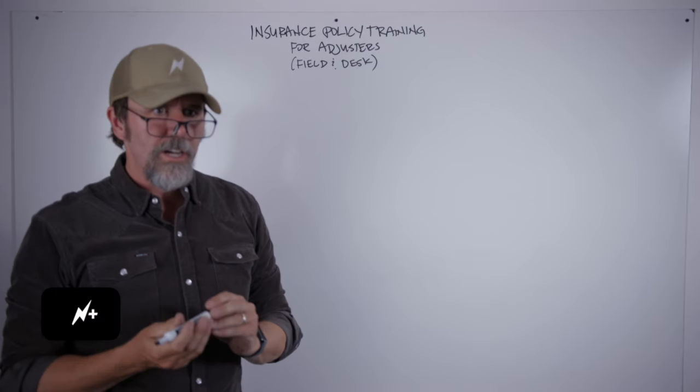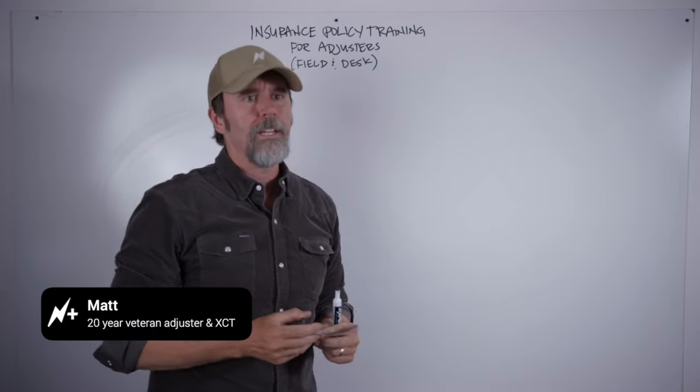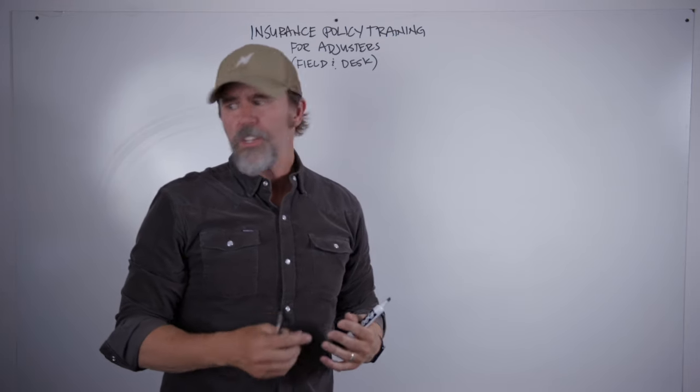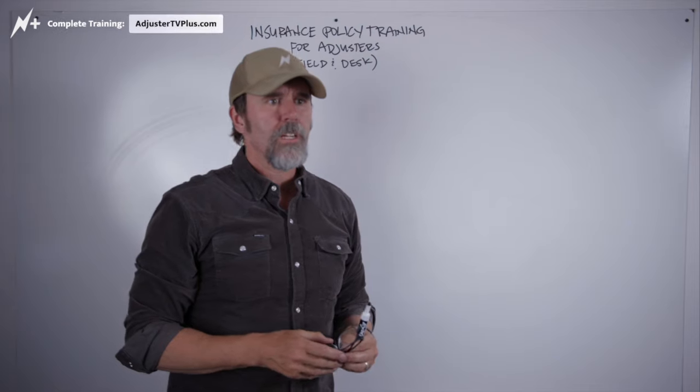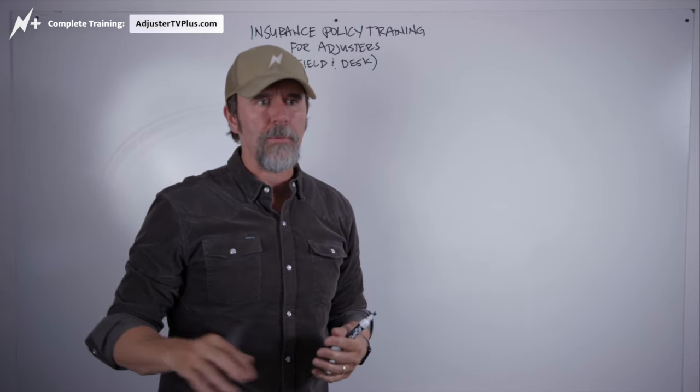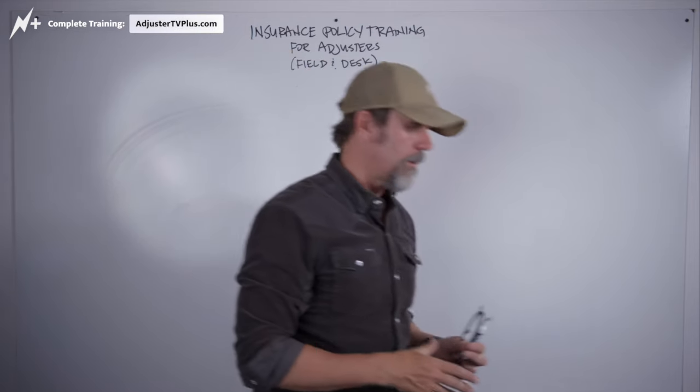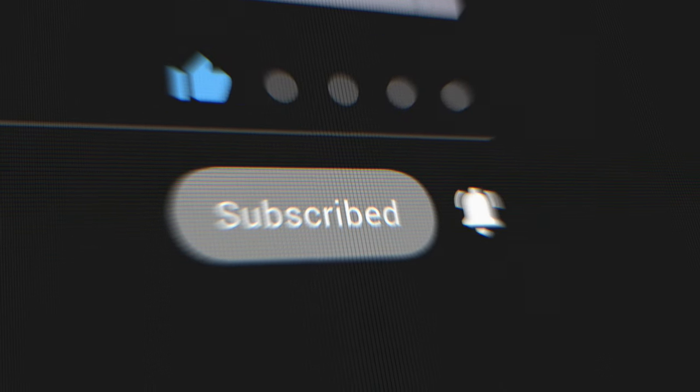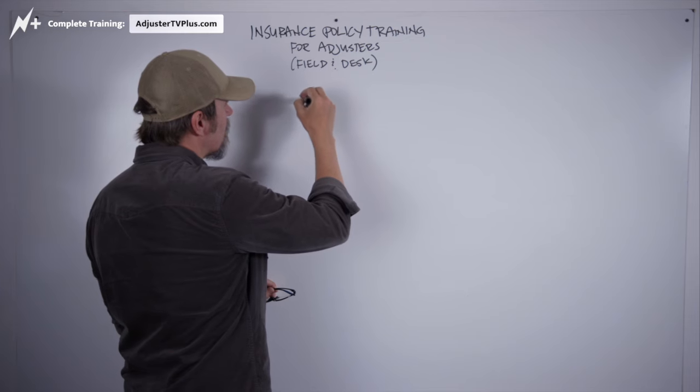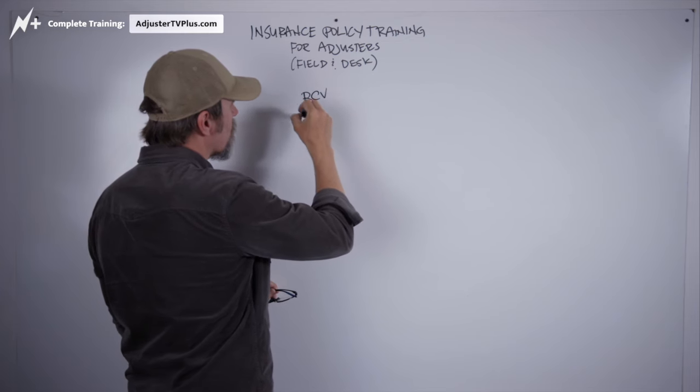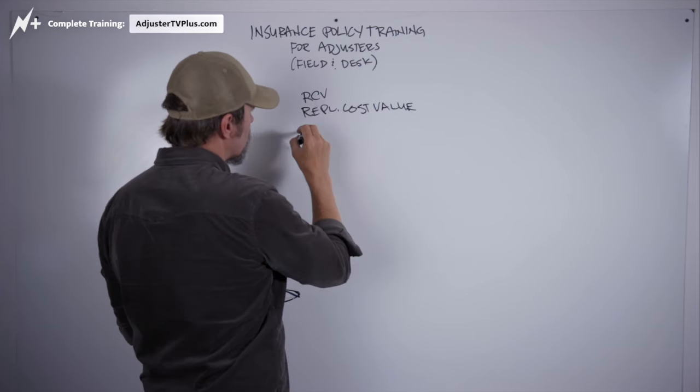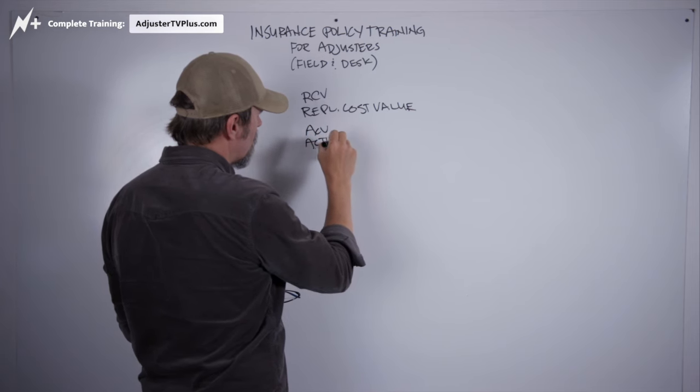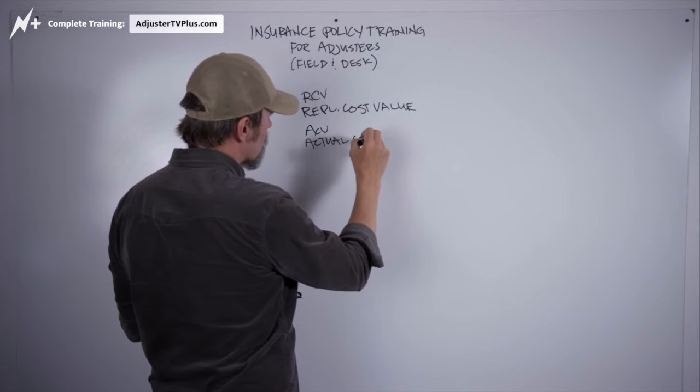All right, so let's talk about replacement costs and actual cash value. These are sort of foundational concepts that every single possible claim you're ever going to do are going to deal with in some way. Basics of them, and there's not a whole lot to them, is that the replacement cost, the RCV, we call it RCV or replacement cost value, versus the ACV, which is the actual cash value.